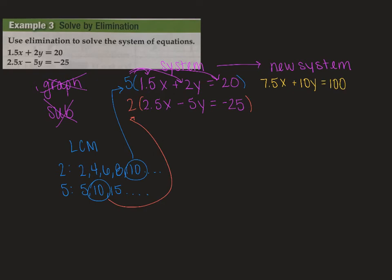And then we also have in our new system, so is that one, now we have this one. So we have 2 times 2.5, so that's 5x minus 10y equals, and then we have 2 times negative 25 is negative 50. So this is our new system.